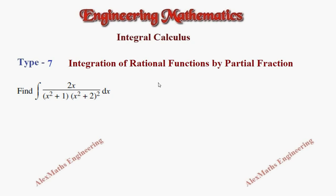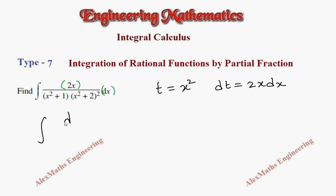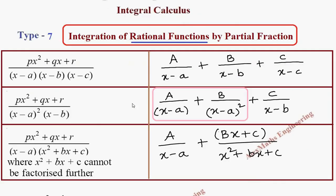We apply the substitution: let t equal to x². From this, dt equals 2x dx. Since we find 2x dx in the numerator, our question becomes integral of dt divided by (t + 1)(t + 2)². We identify a repeated factor here.